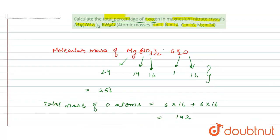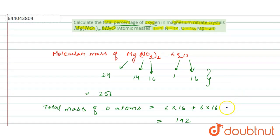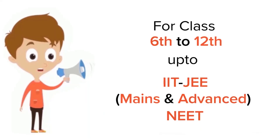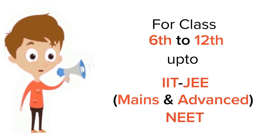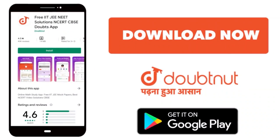So 75 percent of oxygen is present in magnesium nitrate crystals. For class 6 to 12, IIT-JEE and NEET level, trusted by more than 5 crore students, download Doubtnet app today.